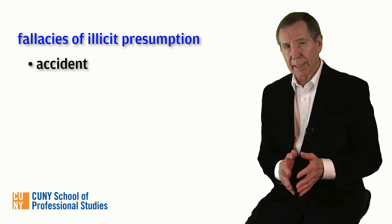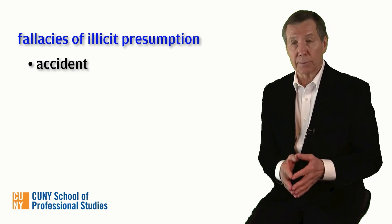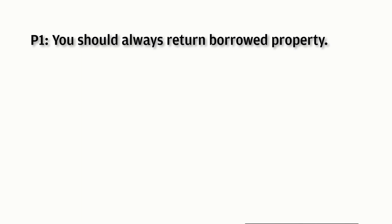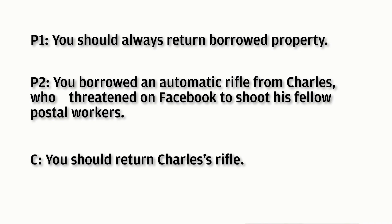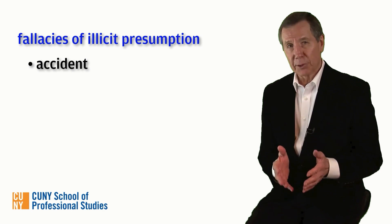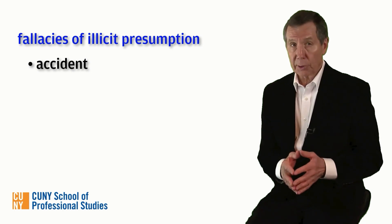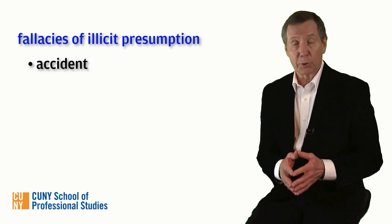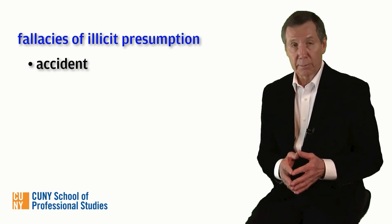Here's an example. Note the general rule stated in the first premise and the exceptional case to which it is wrongly applied in the conclusion. Premise one, general rule: you should always return borrowed property. Premise two: you borrowed an automatic rifle from Charles, who threatened on Facebook to shoot his fellow postal workers. One of the premises is a general claim about returning borrowed property. While this is true in almost all cases, there are exceptions, including the return of firearms to potential mass murderers.